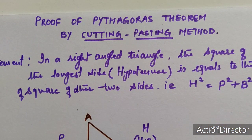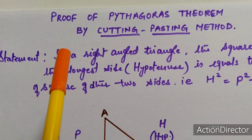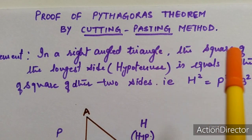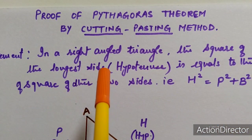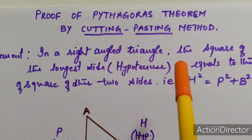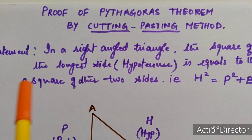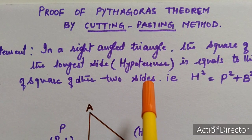So actually what is Pythagoras theorem? It states that in a right angle triangle, the square of the longest side — that is the hypotenuse — is equal to the sum of the squares of the other two sides.